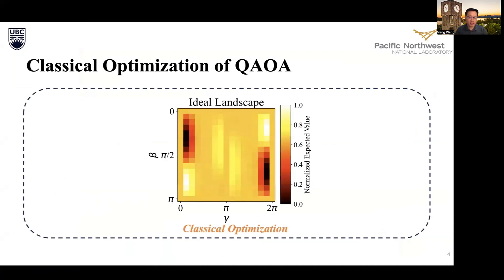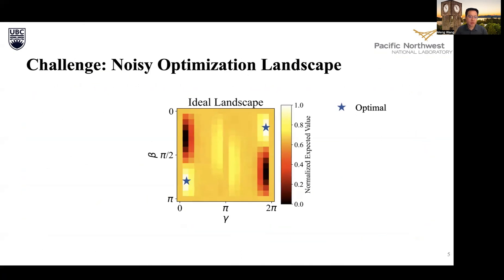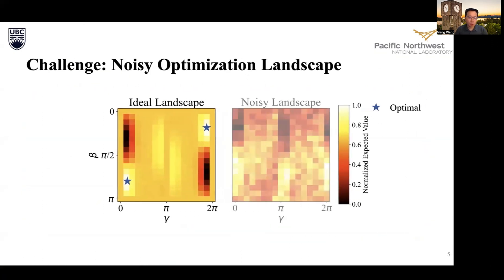On an ideal optimization landscape, it could easily navigate to the ideal solution points. However, in realistic noisy environments, the optimization landscape becomes significantly distorted, making it impossible to identify true optimal solutions. As the underlying graphs increase in size and complexity to represent larger real-world problems, the detrimental impact of noise escalates exponentially.